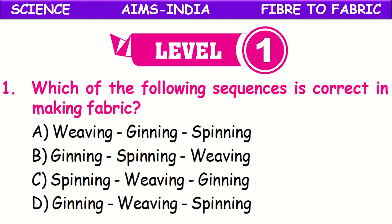Which of the following sequences is correct in making of fabric? The process of conversion from fiber to fabric undergoes different procedures. First, the fiber is separated from the seeds — that process is called ginning. Then the pure fiber obtained is twisted and rolled to get yarn — that process is called spinning. Then those yarns are made into fabric by the process called weaving or knitting. So the sequence is: ginning, then spinning, and finally weaving.